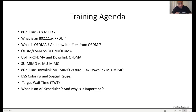Then we're going to move to how OFDMA works. We have two types of OFDMA: uplink OFDMA and downlink OFDMA. The video is going to talk about how this works, the benefits, and the frame exchange that happens to enable both uplink and downlink OFDMA.